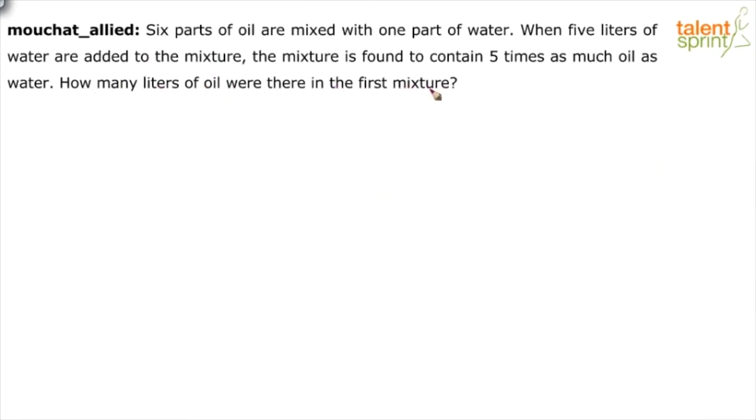So we have some mixture first, right? Mixture of what? Oil and water, where six parts of oil are mixed with one part of water. So can I say oil is to water equals 6 is to 1? This is the first mixture. To this, five liters of water is added. So we are adding pure water, 100% water. How much? Five liters. Initial quantity, let us assume it is Q liters.